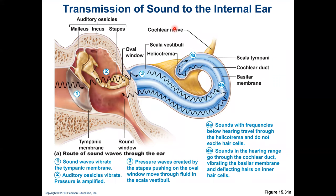How do we transmit sound to the inner ear? Sound waves come from outside the body and vibrate the tympanic membrane, which separates the outer ear from the middle ear. This vibrates the auditory ossicles — malleus, incus, and stapes — amplifying the pressure. Then the stapes pushes against the oval window, creating vibrations in the fluid of the cochlea.